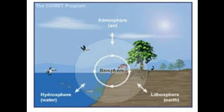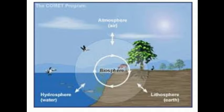Land, water, and air are the major domains of the earth which sustain life. We can see in the picture — land, water, and air. These 3 are the major domains of the earth which sustain life. We have to learn the definitions of these domains.